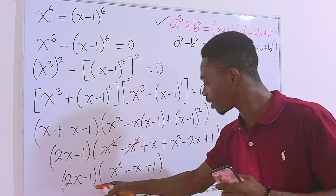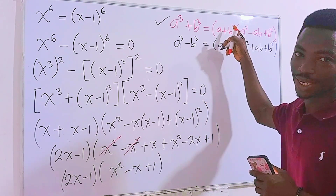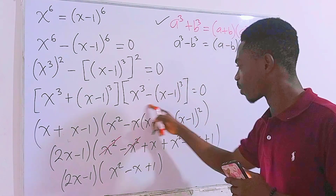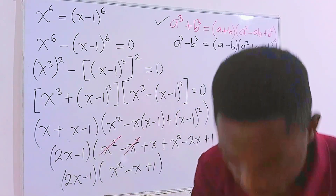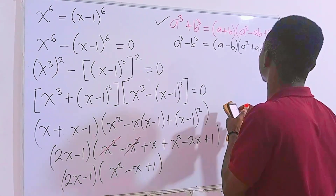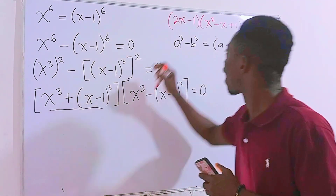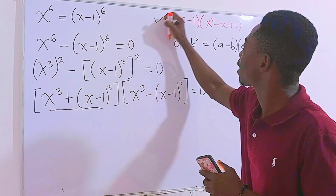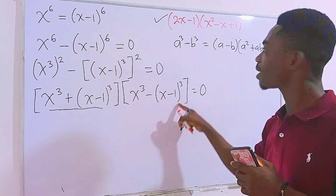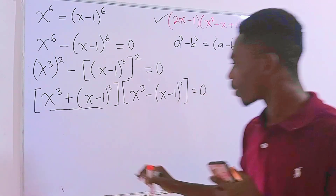We are done with the first factor. I'm going to copy this result up and then work on expanding the second factor using the difference of cubes identity.